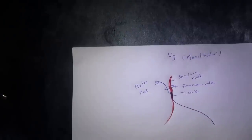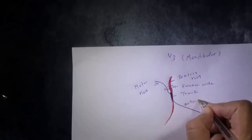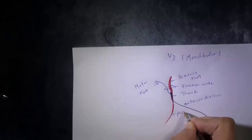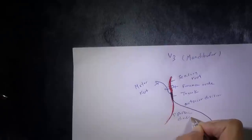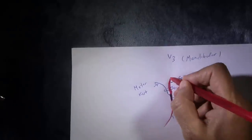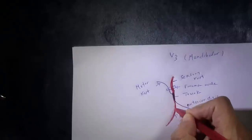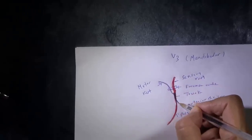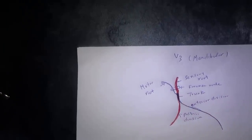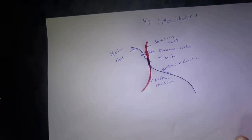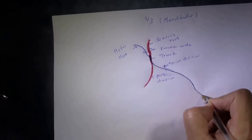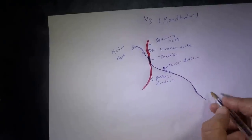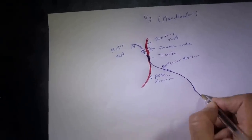The anterior division is primarily motor and the posterior division is primarily sensory. Most of the sensory fibers travel through the posterior division, while most of the motor fibers travel through the anterior division. The anterior division is mainly motor, supplying the muscles of mastication.